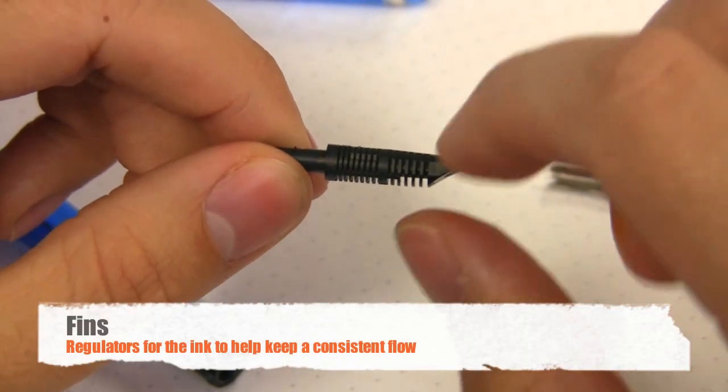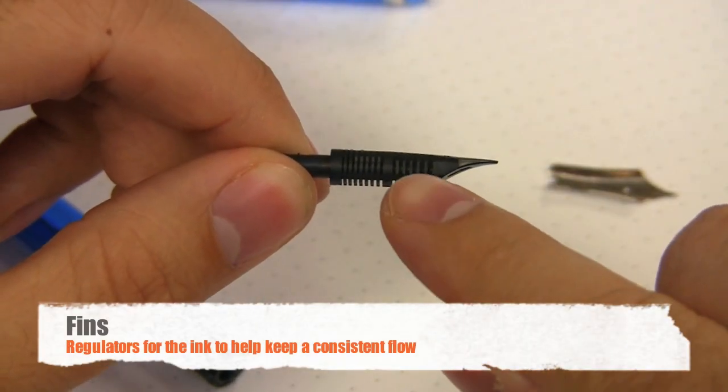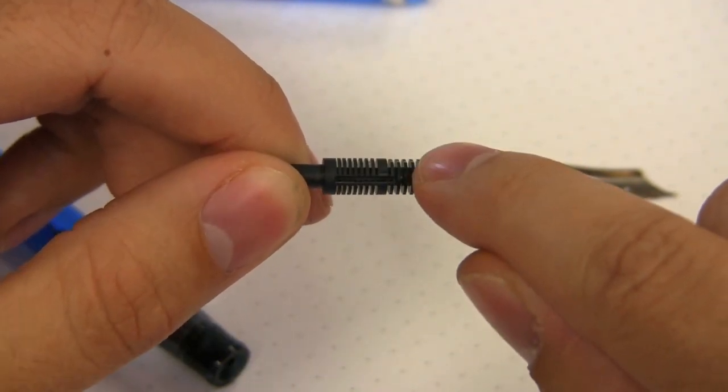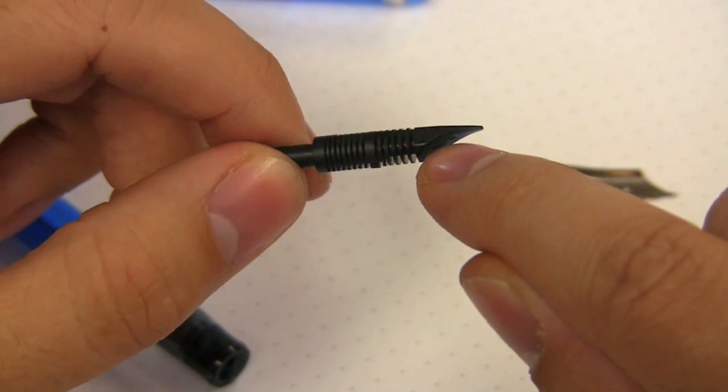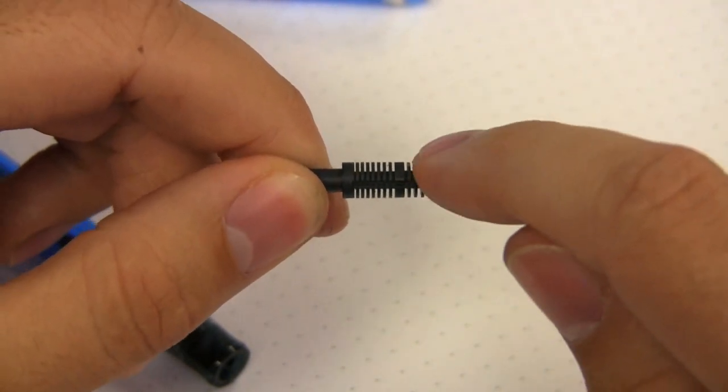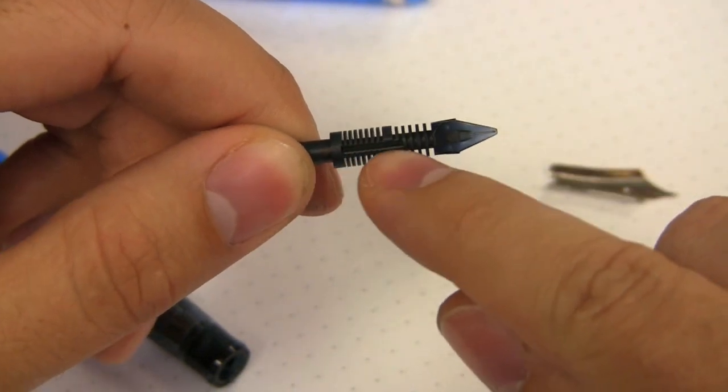Looking at another part of the feed, you can see that it's made up of these tiny little fins. Now what do these fins do exactly? These fins act as regulators for the ink. So these fins will fill up with ink in that space in between as you're writing.